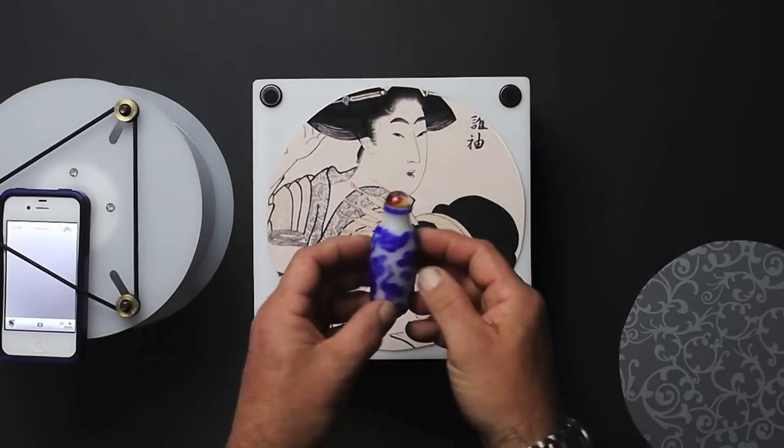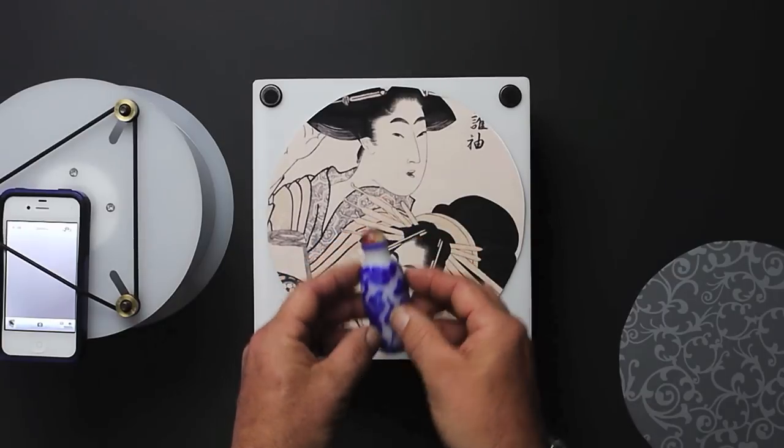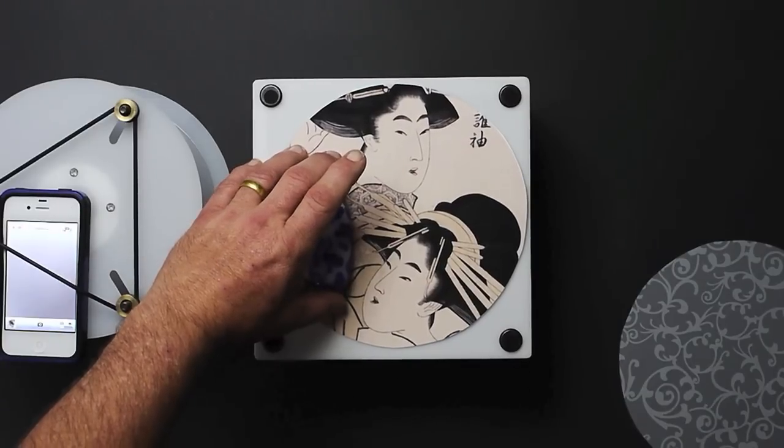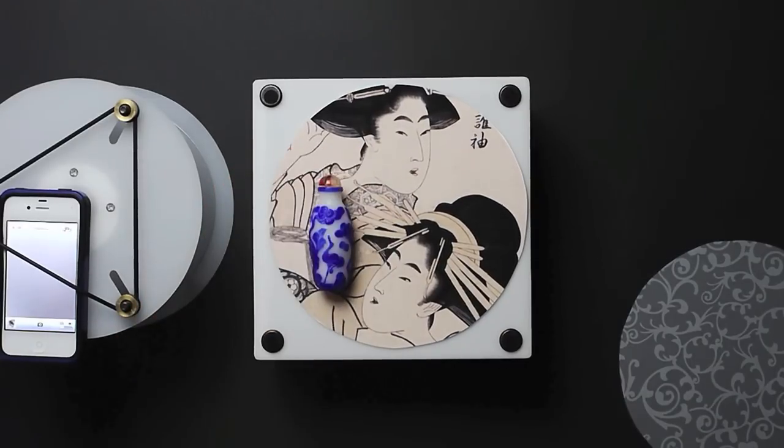Now I'm going to photograph the snuff bottle made out of white and blue glass. I'm using a photograph of an old woodblock print from Japan.